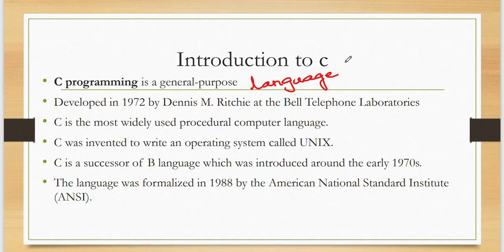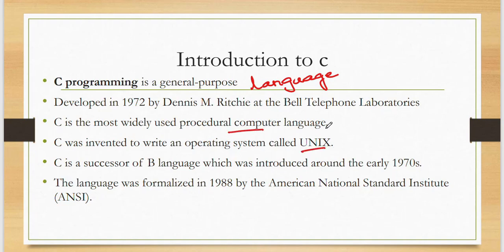C was developed in 1972 by Dennis Ritchie at Bell Laboratories. C is also called the most widely used language, and it is also called a procedural computer language. Procedural computer language means they use some set of procedures — there is a structure with a declaration part, a main function, function declaration, and function definition.